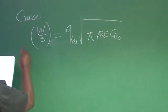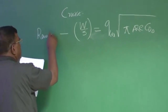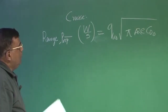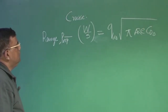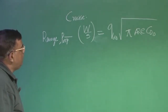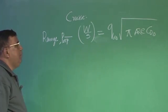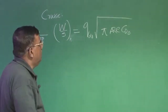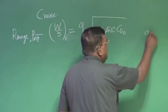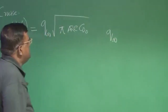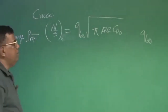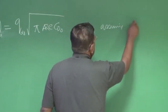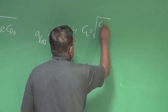This is for range maximum, and of course we are writing this for a propeller-driven aircraft. To calculate W/S I need to know what is the value of Q_infinity. Please understand, this expression was derived assuming CL = sqrt(CD0 / K), because we were maximizing range for a propeller-driven airplane.